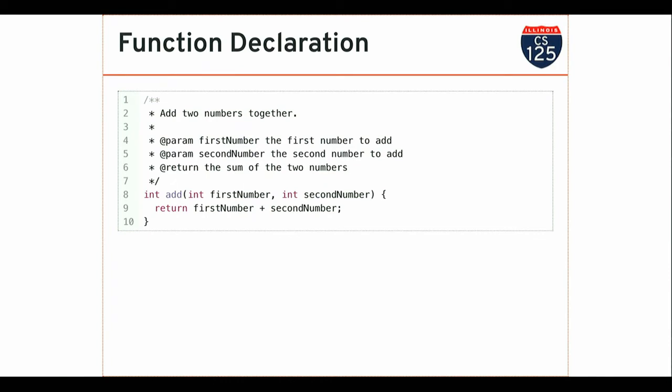Let's look at a function declaration in Java — this is new syntax. Here at the top is a comment structured in a very specific way called Javadoc. This describes what the function does, its parameters, and what it accomplishes. You can use it to automatically generate documentation about this function so it's easier for you and others to use. This is technically ignored by Java — the real work starts on line 8.